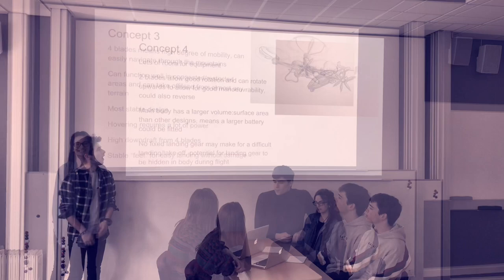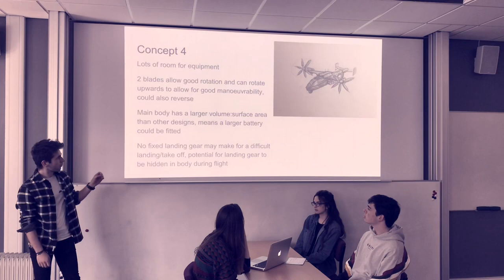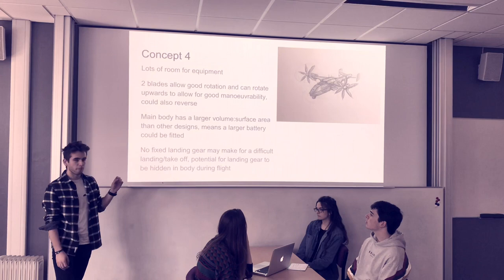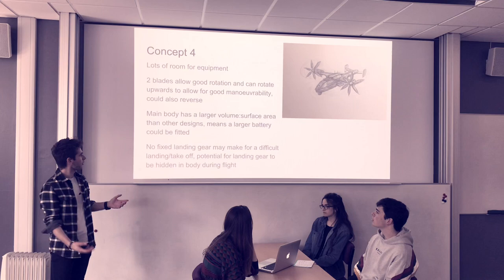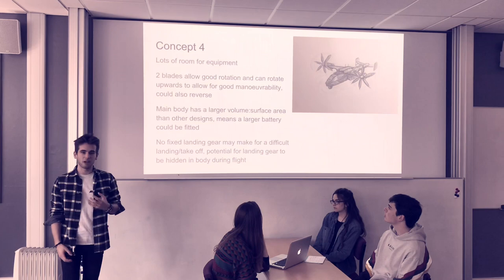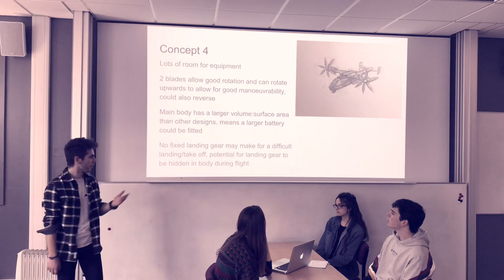Concept four is a VTOL plane loosely based on a Boeing Osprey. It has lots of room for equipment, two blades for good rotation, and can rotate upwards to allow for good maneuverability as well as reversing — a flaw of normal winged aircraft. The main body has a larger volume-to-surface-area ratio allowing greater battery storage capacity. No fixed landing gear may make landing difficult, but there is the possibility of landing gear hidden inside the body during flight.